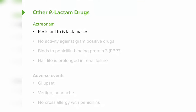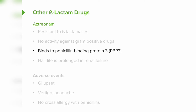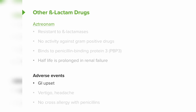Other beta-lactam drugs include aztreonam. It's not commonly used in clinical practice, but it's a drug you need to know because it is resistant to beta-lactamases, which is significant. There is no activity against gram-positive organisms. It binds to penicillin-binding protein type 3, or PBP3. The half-life is prolonged in renal failure, so you can adjust dosing. Adverse events include GI upset, vertigo, and headache. Importantly, there is no cross-allergy with penicillins.